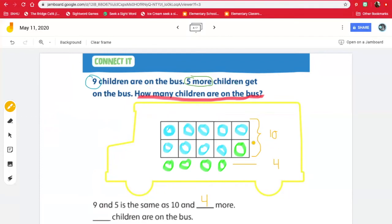So how many children are on the bus? I could add 10 plus four. And I know that zero and four are four. And if I carry the one down, 14. I could also count the picture. So we have 10 in the 10 frame, 11, 12, 13, 14. So how many children are on the bus? 14.